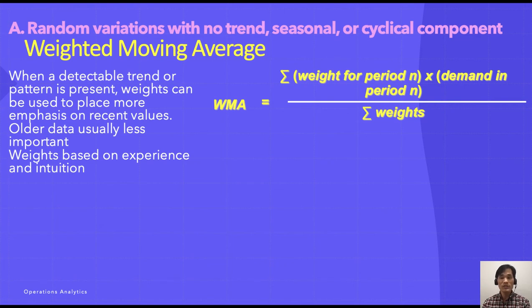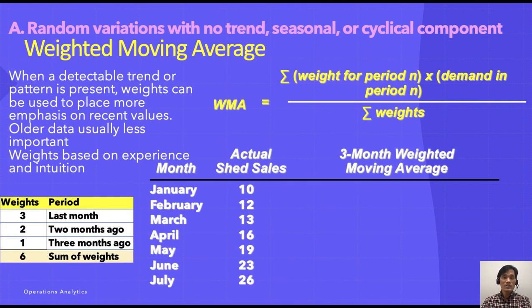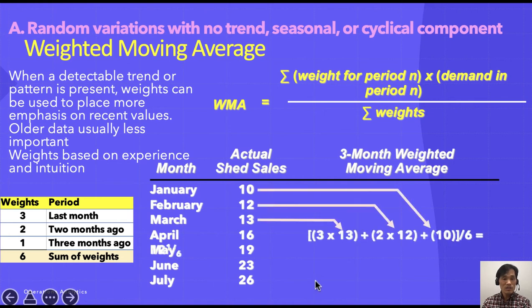The formula for this method is the sum of weight for period n times the demand in the corresponding period, divided by the total weights. If we take an example, say I want to give the weight of three to last month, two to two months ago data, and one to three months ago data. Then last month's data receives more weight than two month or three months data, and the total weights is six.